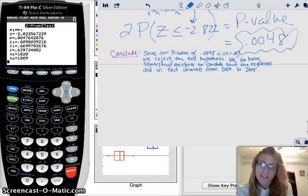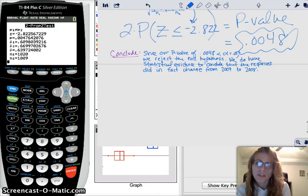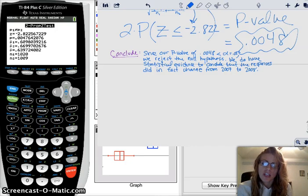Since our P value of 0.0048 is less than our alpha of 0.05, we reject the null hypothesis. We do have statistical evidence to conclude that the responses did in fact change from 2007 to 2008.